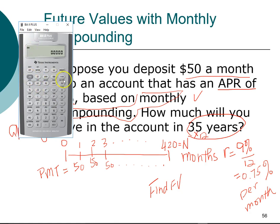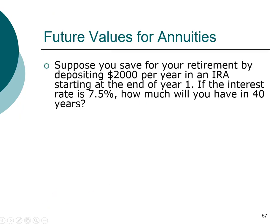Use 2nd → Clear TVM to reset all registers. Enter PMT = −$50 (outflow), N = 420 months, I/Y = 0.75%, then compute FV. At the end of 420 months — or 35 years — you'll have $147,089 if you make a deposit of $50 a month for a total of 35 years.